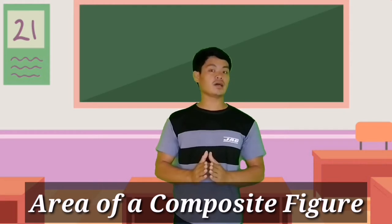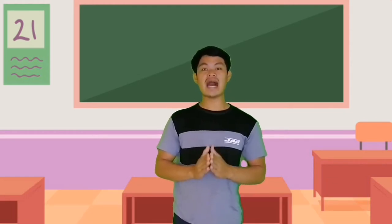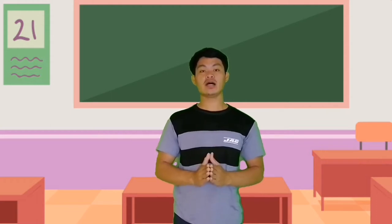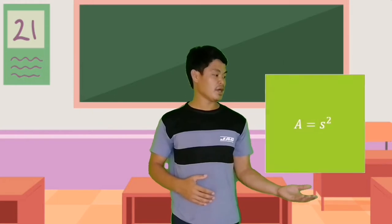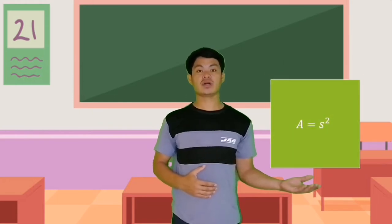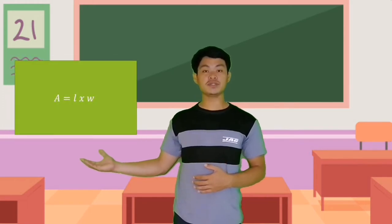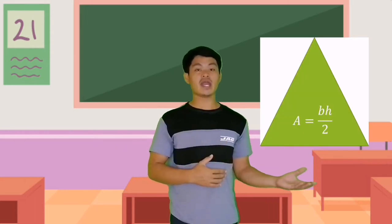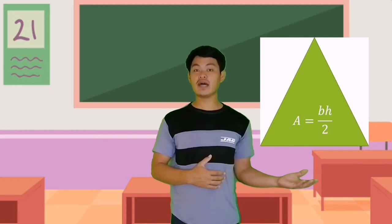To find the area of composite figures, you need to remember the formulas for the plane figures. For a circle, area is equal to pi r squared. For a square, area is equal to s squared. For a rectangle, area is equal to length times width. And for a triangle, area is equal to base times height divided by 2.